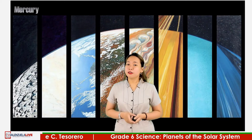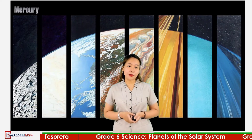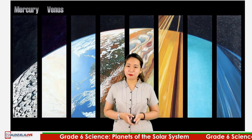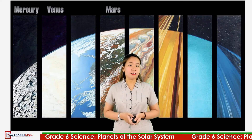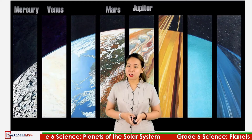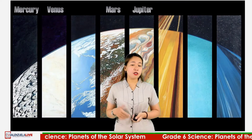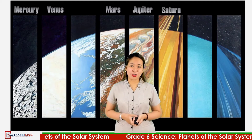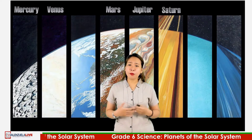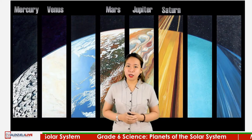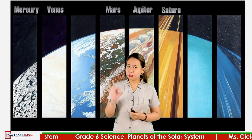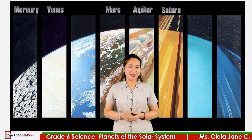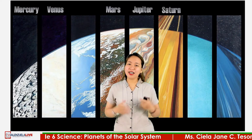Mercury was the Roman god of commerce and cunning. Venus was the goddess of love. Mars was the god of war. Jupiter was the chief god. And Saturn was the god of agriculture. Five planets were already named and we are still missing three. Can you name the remaining three planets? Type it in our comment box.